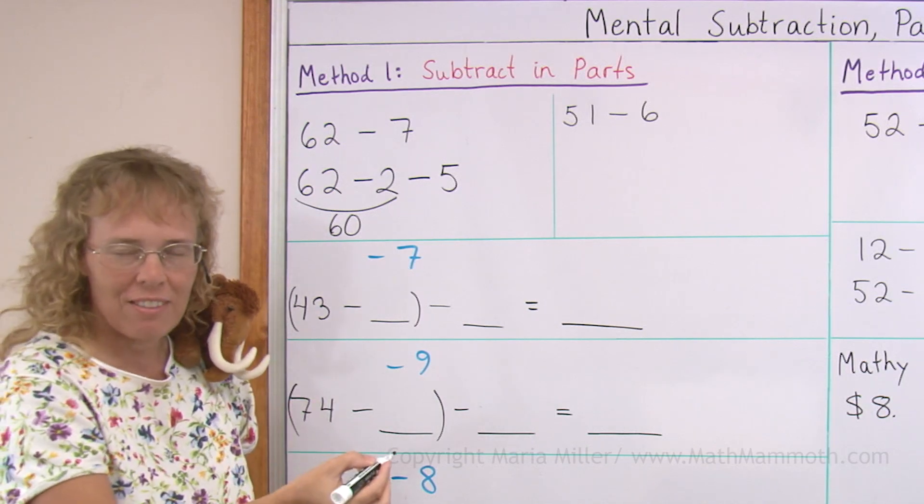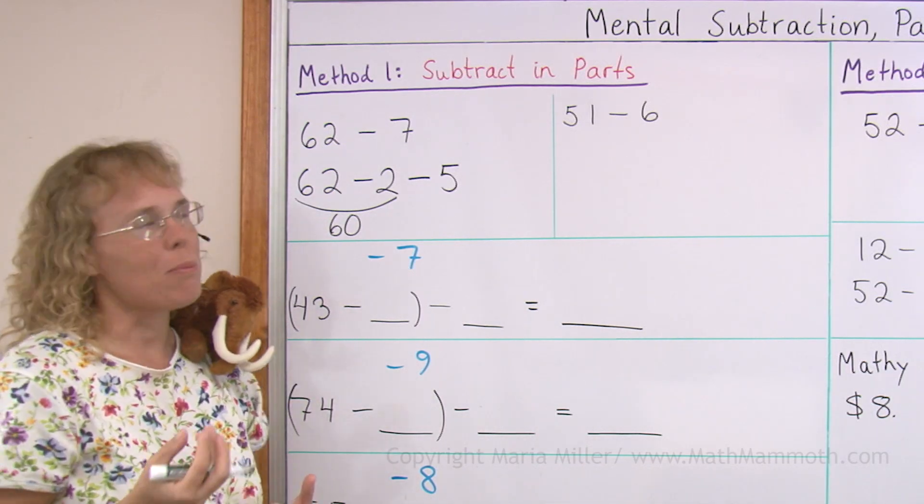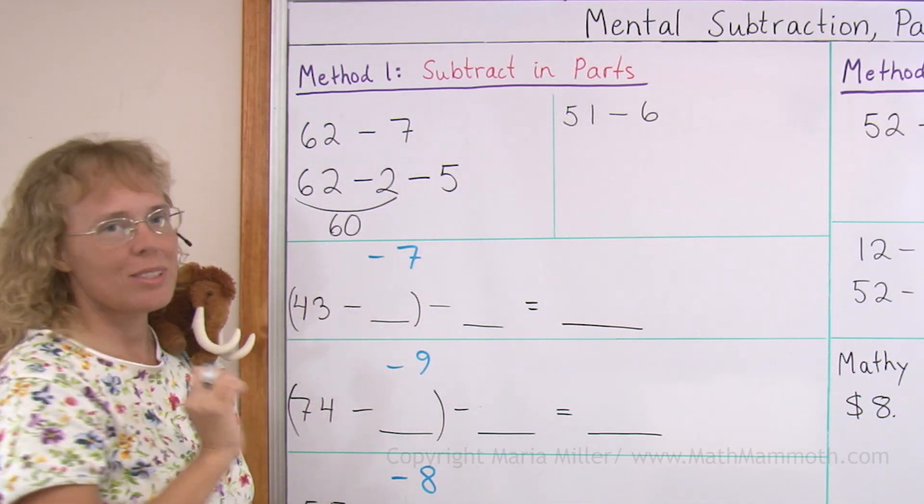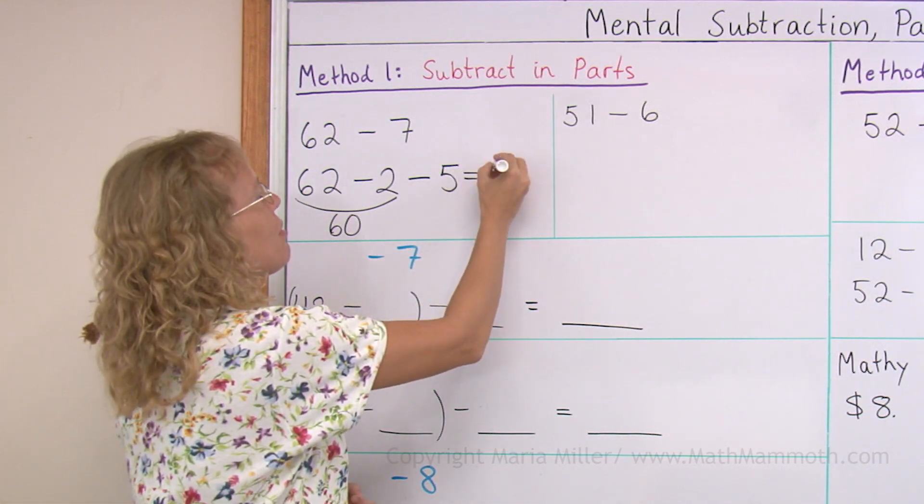And now this here is 60, right? So 60 minus 5, that's an easier subtraction problem than our original one. 60 minus 5 equals 55.